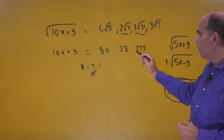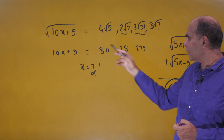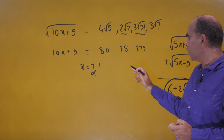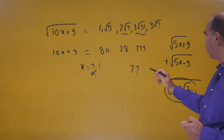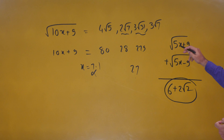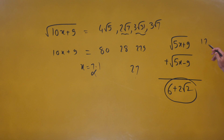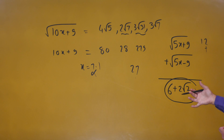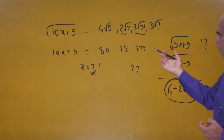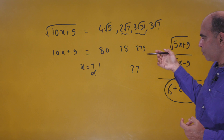For 3√31, squaring gives 279, so 10x = 270 and x = 27. Putting x = 27 in, I get √144 = 12, which is already larger than the right-hand side value of 6, so this can't be the answer.